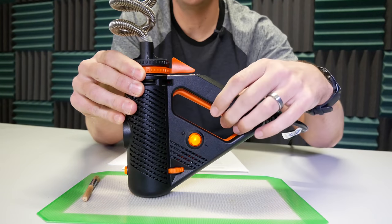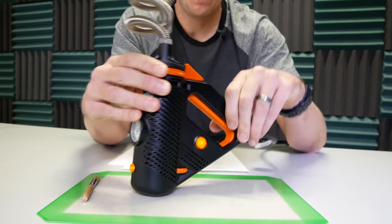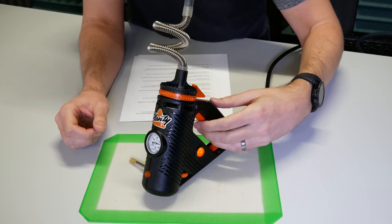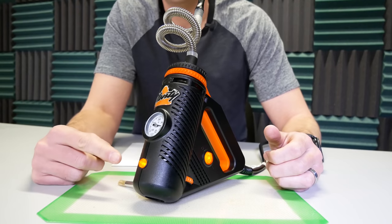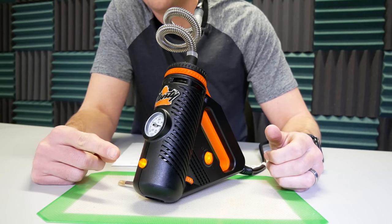On the back you have your auto release handle which controls the heating. To heat the Plenty up, all you have to do is grip the handle. The light turns on indicating heating. Once the light turns off, it's fully heated.